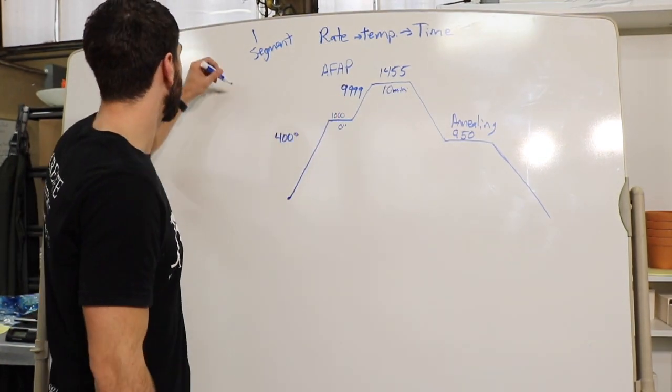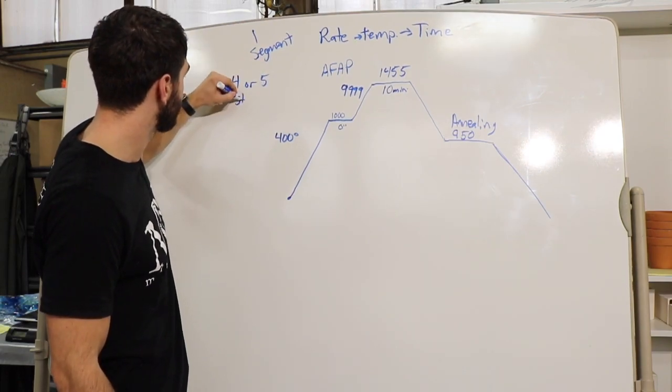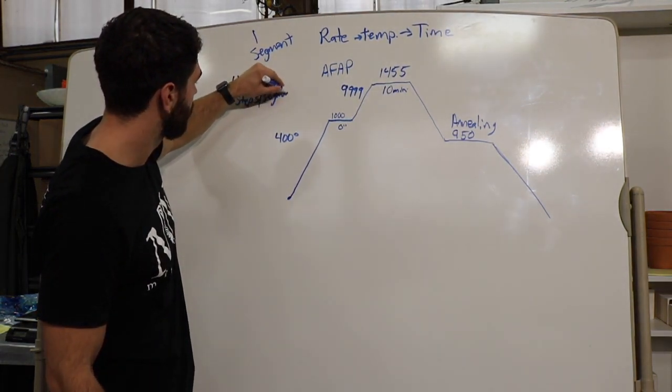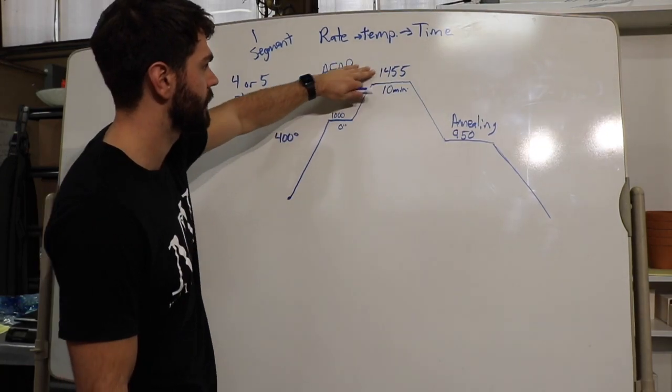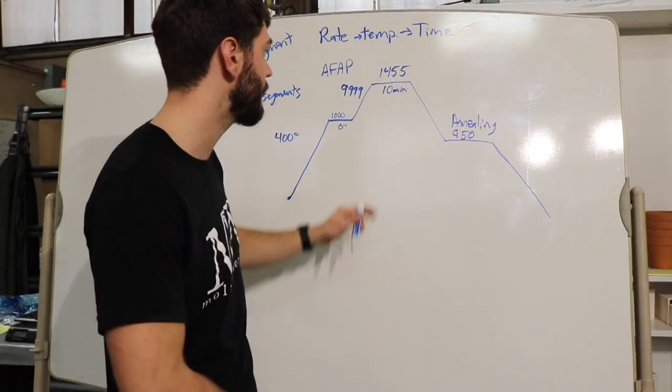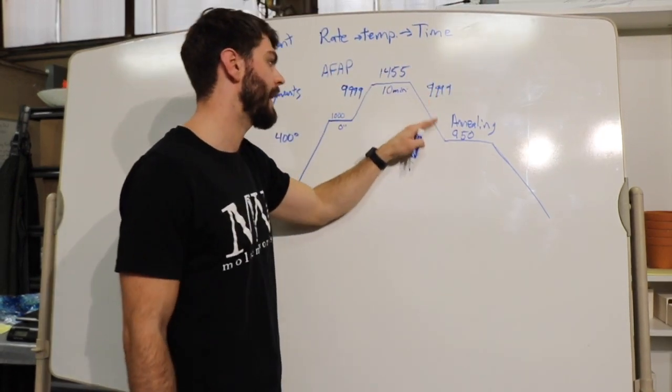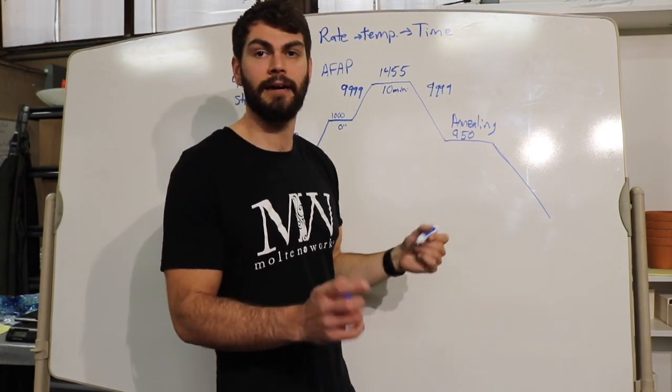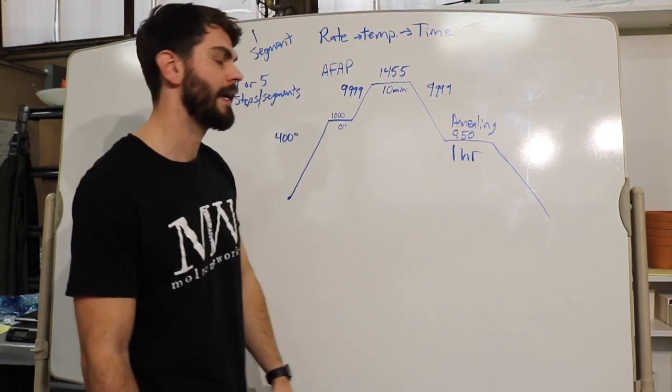Now in this program we're gonna run either four or five steps or segments. Okay, now that segment one, segment two would be 9999 to 1455 and hold for 10 minutes. These are the things you would actually plug in. And then on the way down, same thing, we're gonna go as fast as we can down to that 950. Now for this size of project we're gonna hold it there for one hour.